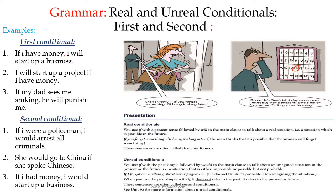Another example: 'If my dad sees me smoking, he will punish me.' I started with 'if,' so I used the comma. If I reverse the sentence: 'My father will punish me if he sees me smoking' — no comma is needed because I started with the result. This is the first conditional in brief.